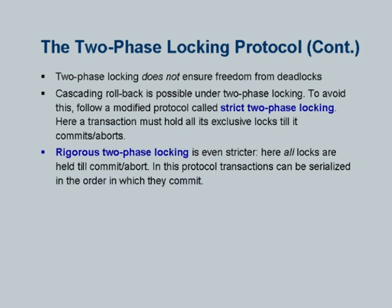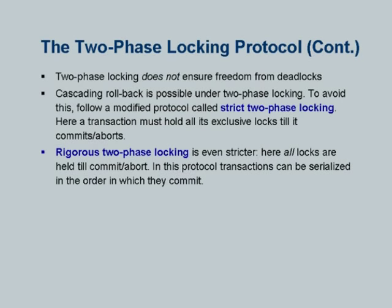Two-phase locking is widely used. But bare-bones two-phase locking is not enough, because cascading rollback is possible, and recoverability is also a problem. You can have a situation where a transaction releases a lock before it commits and another transaction gets that lock and commits. So at minimum, if you get an exclusive lock to write an item, you cannot release the exclusive lock until you commit. This is called strict two-phase locking, and it is absolutely essential to make sure that the schedule is recoverable.